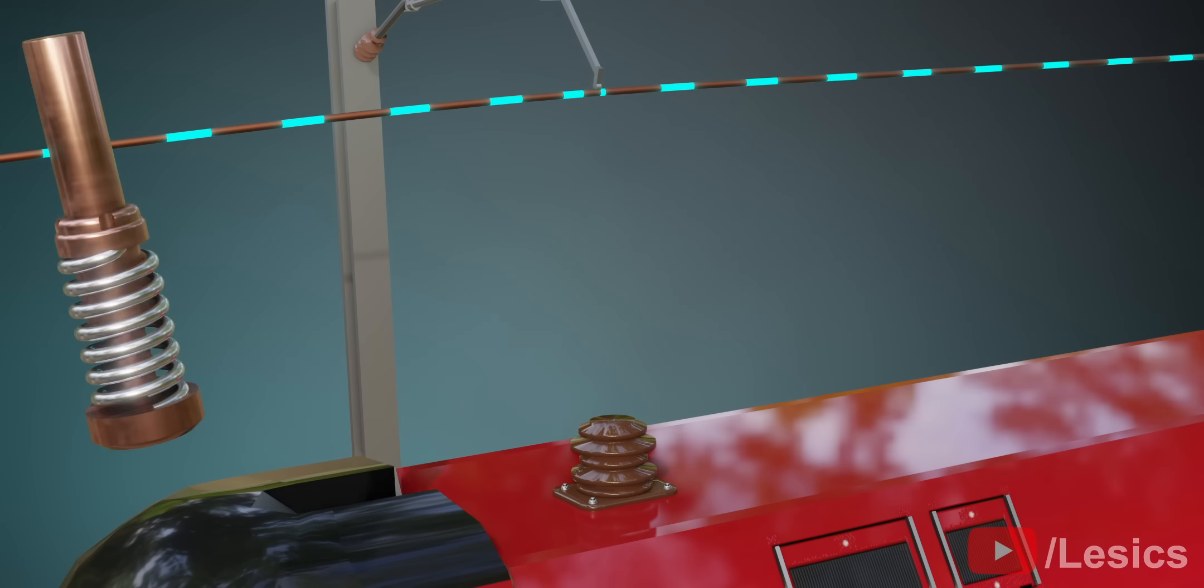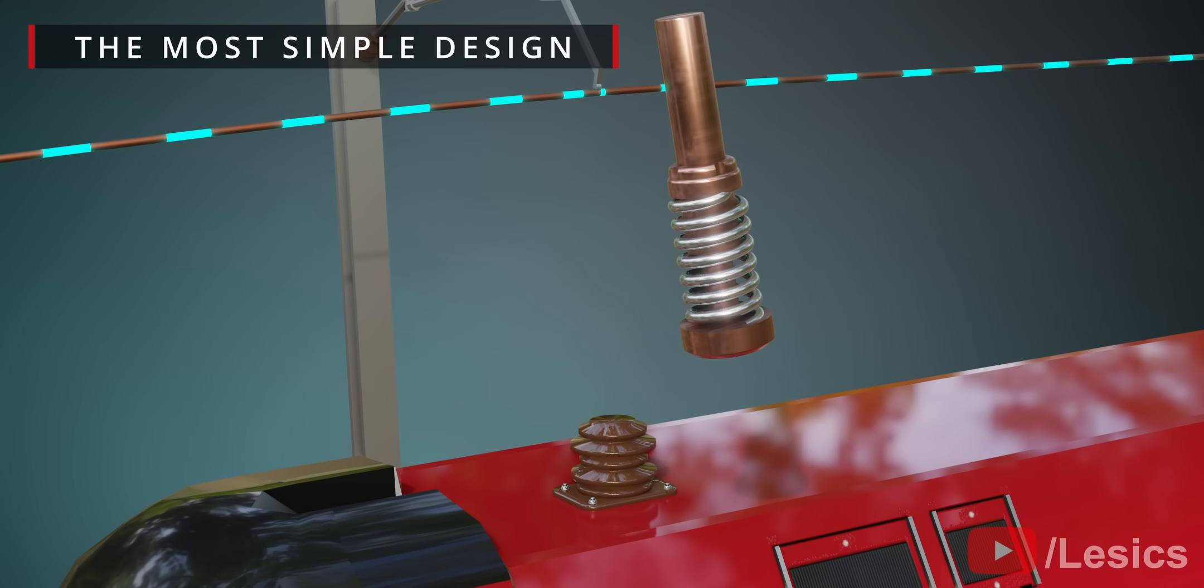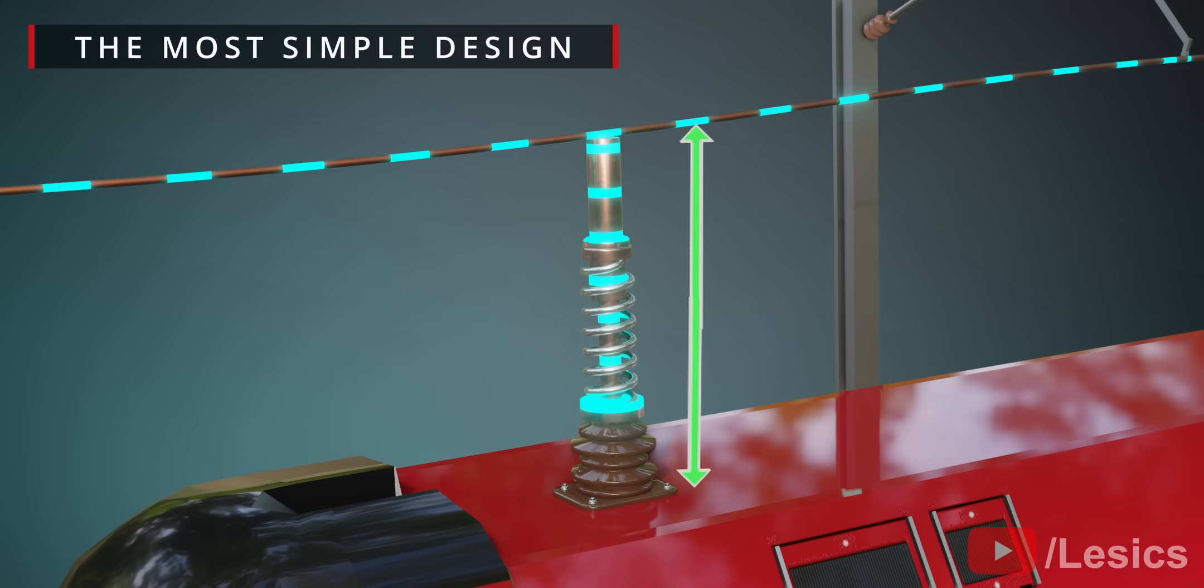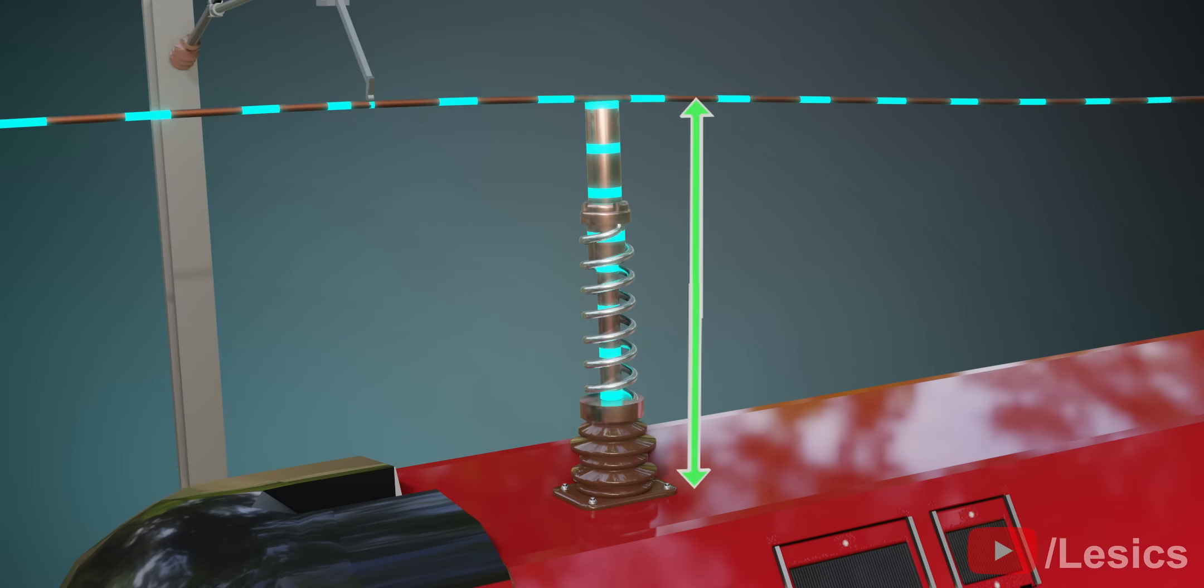This simplest pantograph would look like this: a copper conductor with a compressed spring arrangement. When allowed to rise, it starts collecting the current. The current is then supplied to the motors.